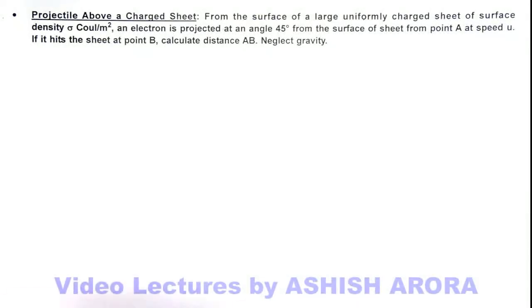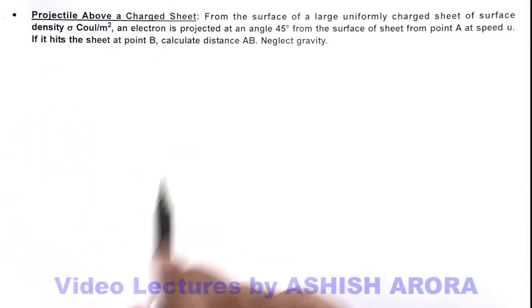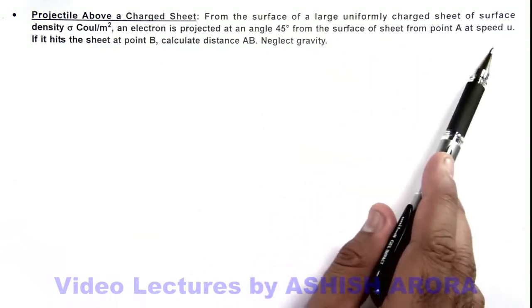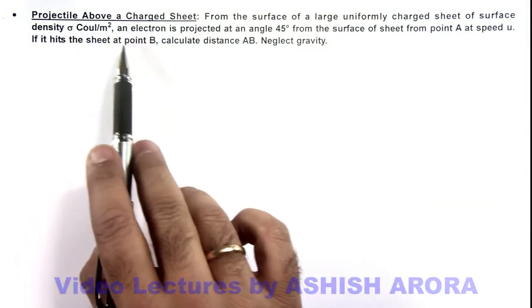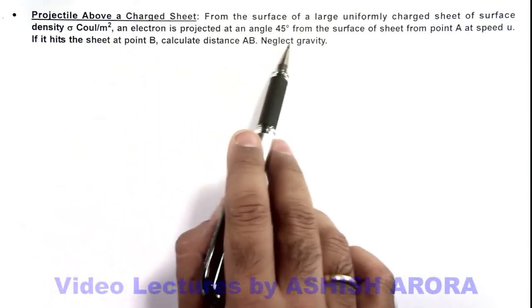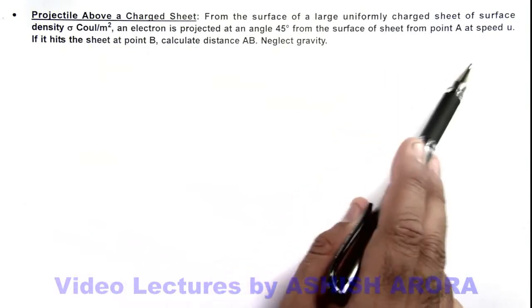In this illustration, we are going to study a projectile above a charged sheet. From the surface of a large uniformly charged sheet of surface density sigma, an electron is projected at an angle 45 degrees from the surface of the sheet from point A at speed u.